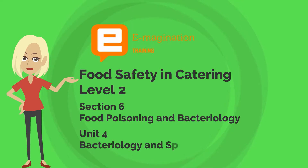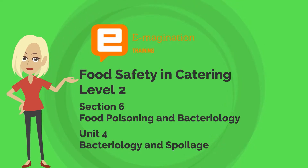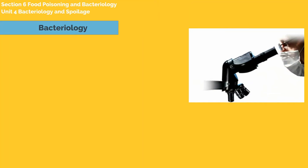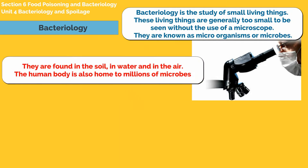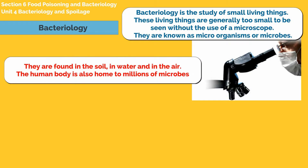In this fourth unit we're looking at bacteriology and spoilage. Bacteriology is the study of small living things. These living things are generally too small to be seen without the use of a microscope. They are known as microorganisms or microbes. They are found in the soil, in water and in the air. The human body is also home to millions of microbes.